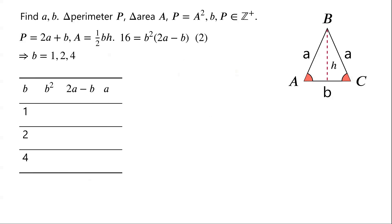For each value of B, from equation 2, we can work out A. For B equals 1, B squared is 1. 2A minus B equals 16. So A equals 16 plus 1 over 2, which is 17 over 2.